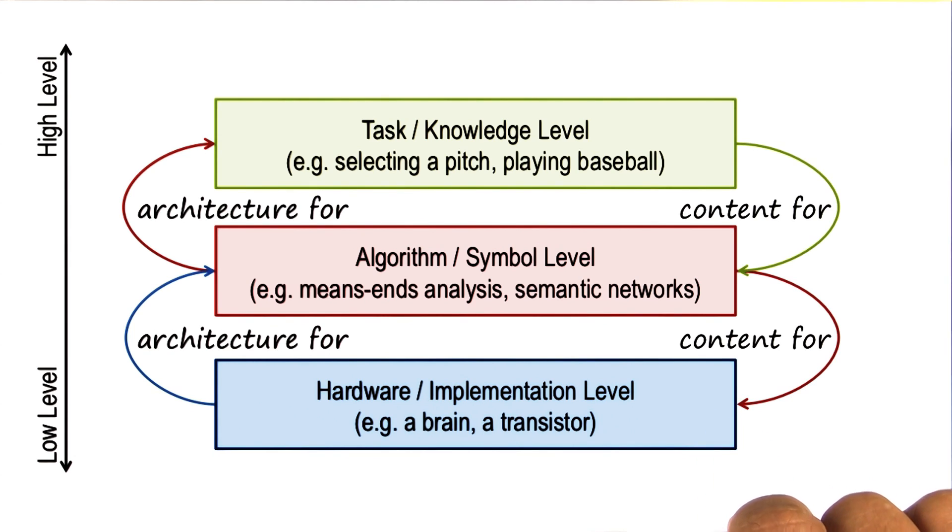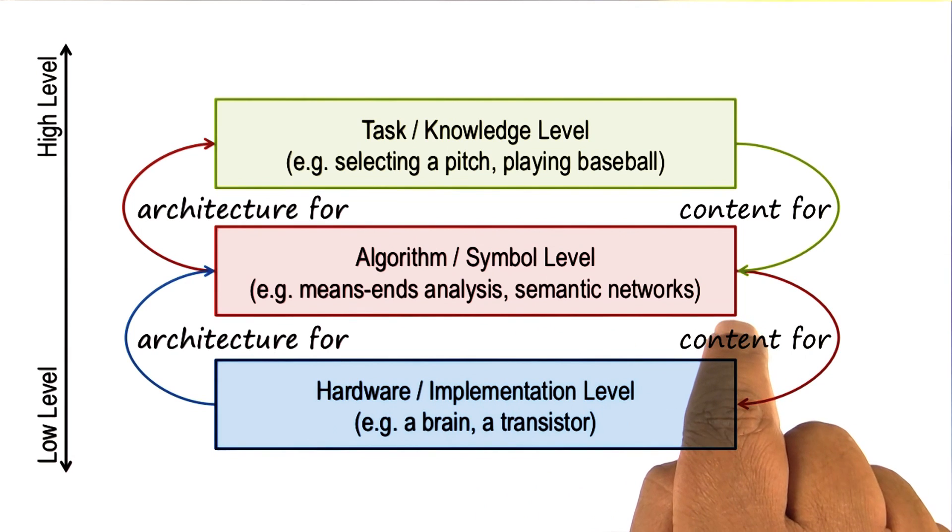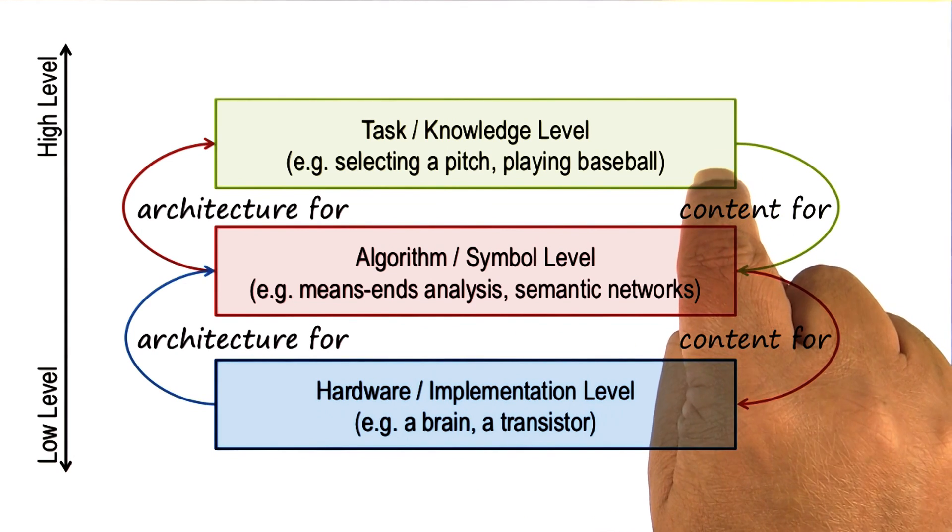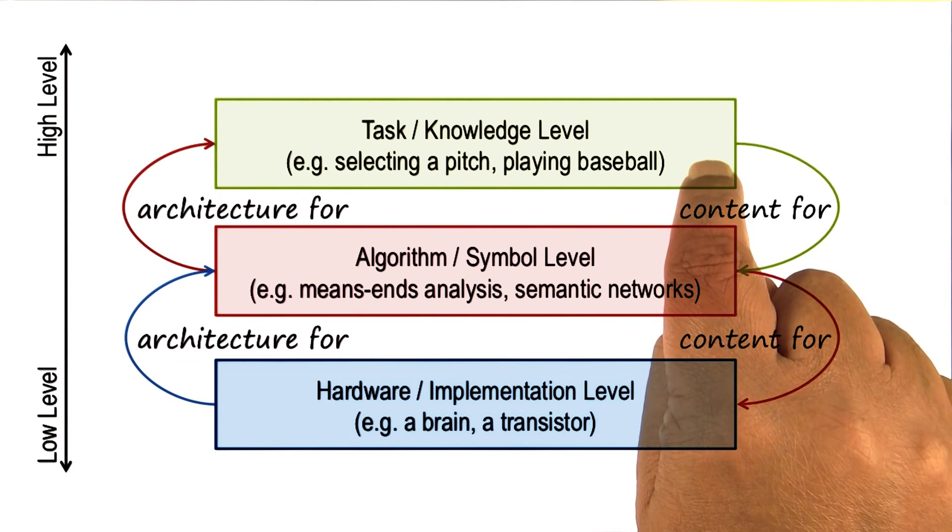So as an example, one might say we'll represent things in the form of a semantic network, fair enough. But what exactly are you going to represent in a semantic network? That's going to come from the knowledge level.